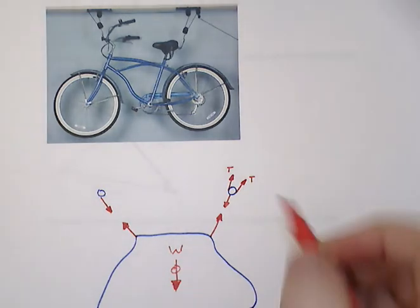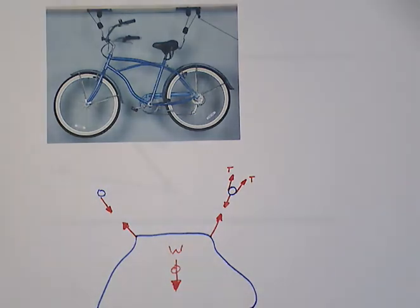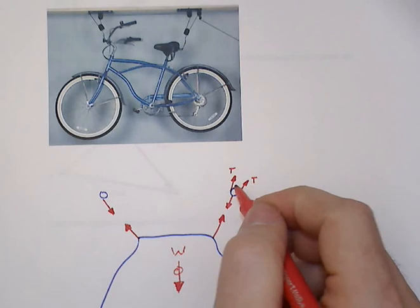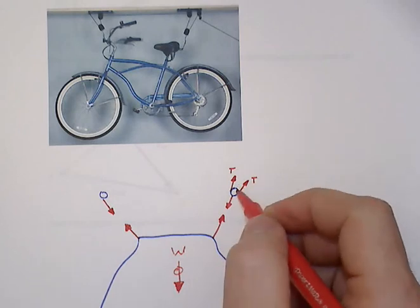And unlike some of the other examples we've had throughout the semester where these two ropes came off of the pulley at exactly the same angle, here they don't. And that would, of course, influence our equilibrium values.